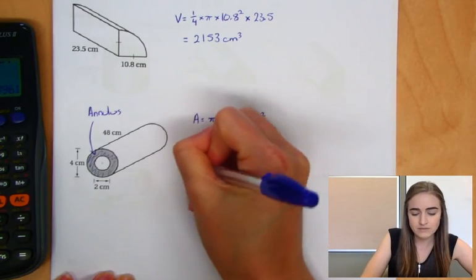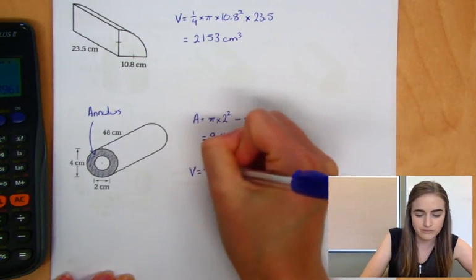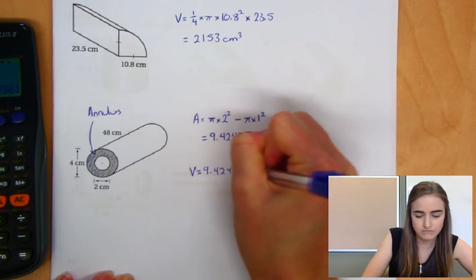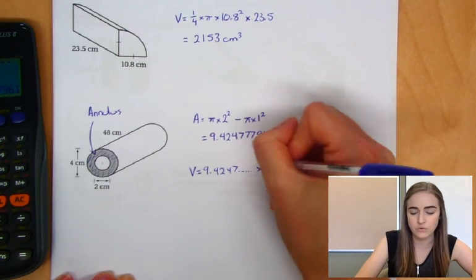So our volume then is going to be that area of the base. So 9.42477... times the height of that shape, which is that 48.